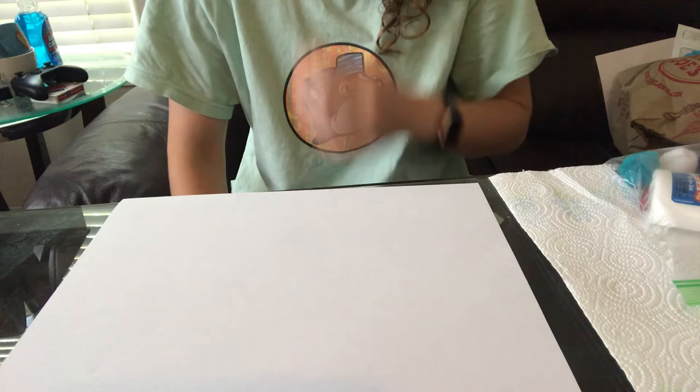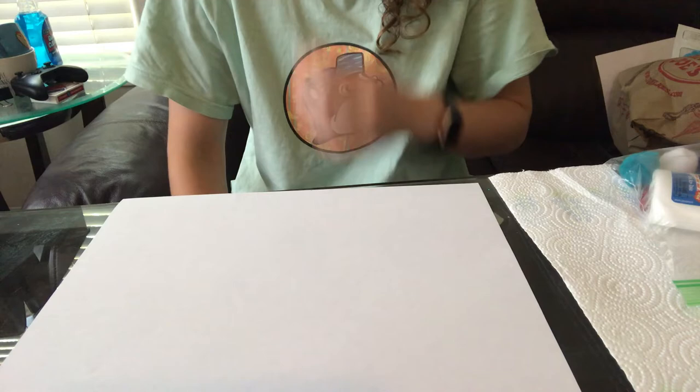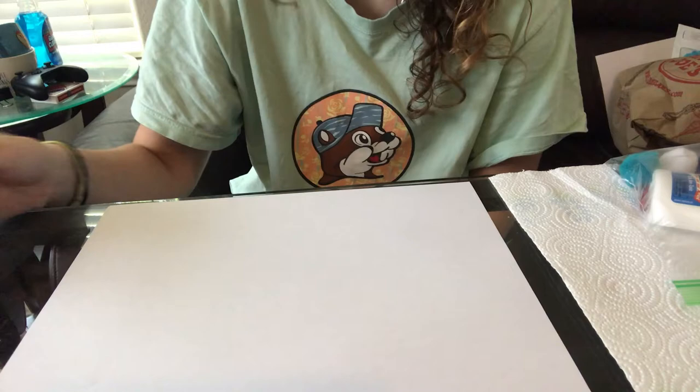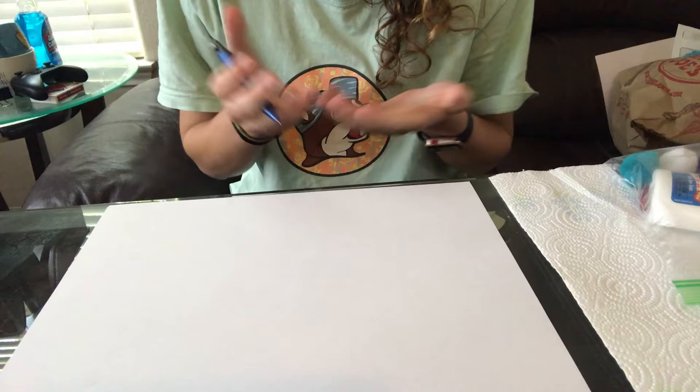First things first, we're going to be putting Carl on our piece of paper. So you can start out by drawing a scene around where you want Carl to go, or you can draw around Carl after you're done. Personally, I'm going to draw first, so I'm going to pause this video and come back.